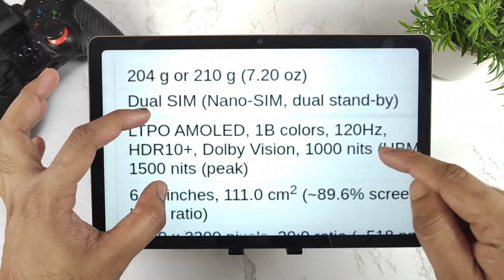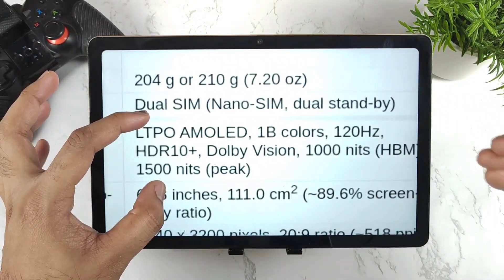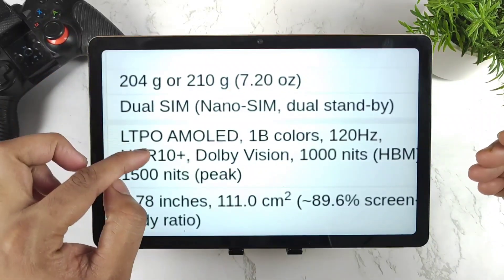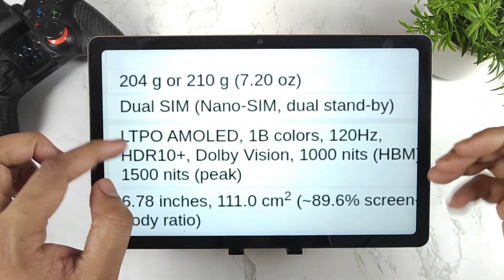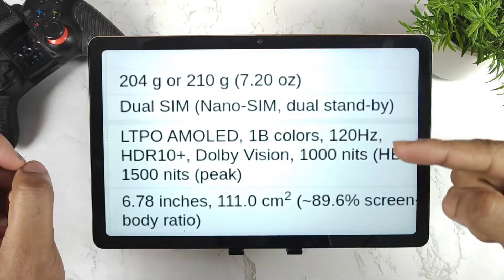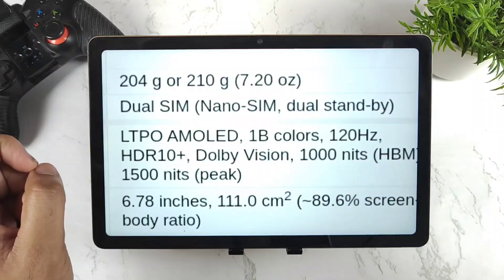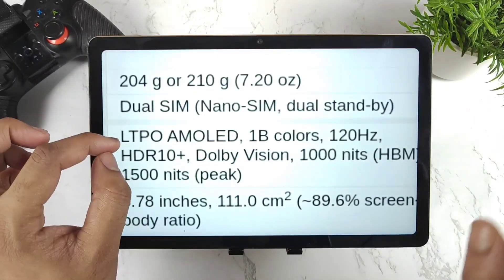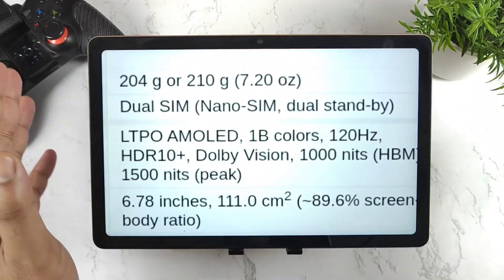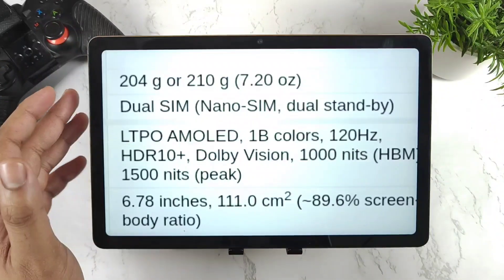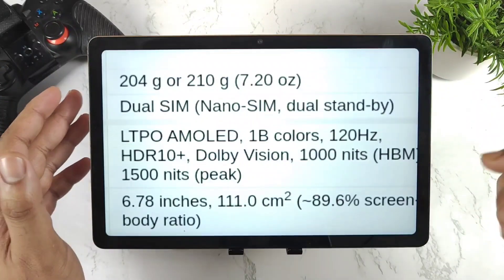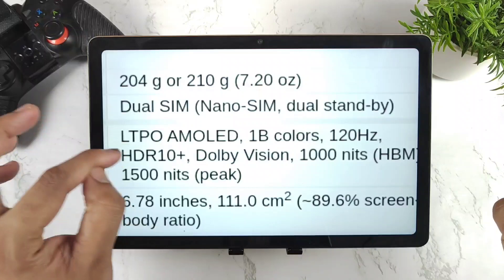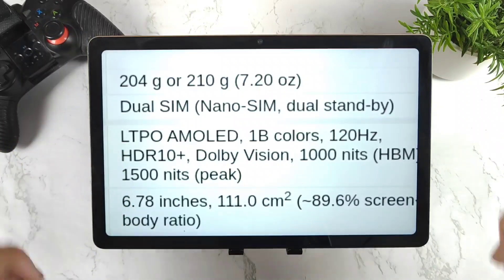Regarding the display, there is a lot of improvement in the iQOO 9 Pro, which is really good. LTPO means you can get a variable refresh rate from 1Hz to 120Hz — that's the advantage of this LTPO panel technology. The refresh rate keeps changing depending on the content to save battery, which is a really good technology.